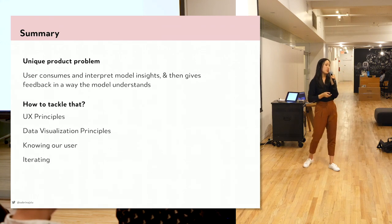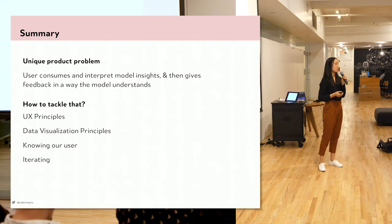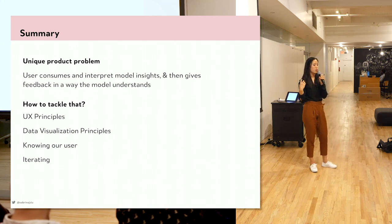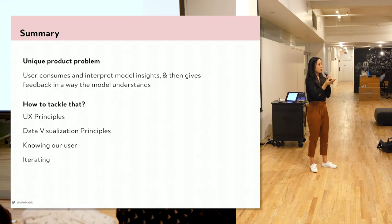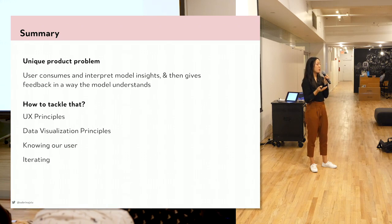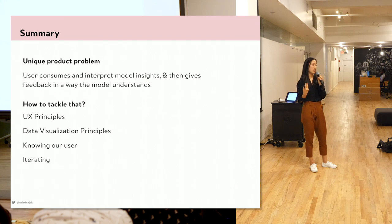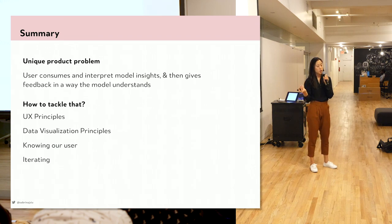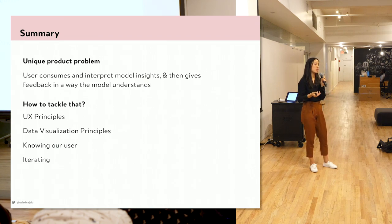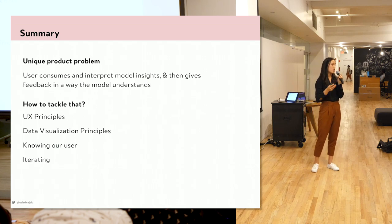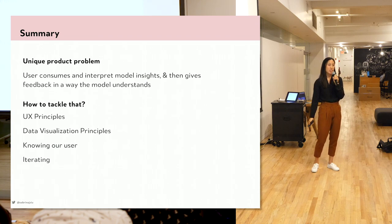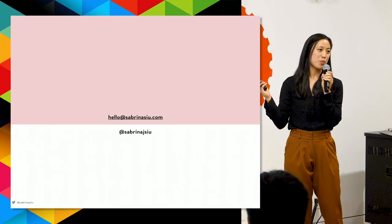To summarize the unique product problem: the user needs to be able to do their job with model outputs, but we also need inputs from them — so it's designing with just the right amount of uncertainty, while empowering them, while keeping the platform simple enough that they know what to do and give us insights. We tackle that through UX principles, understanding technology, data visualization principles, knowing our users, and iterating.